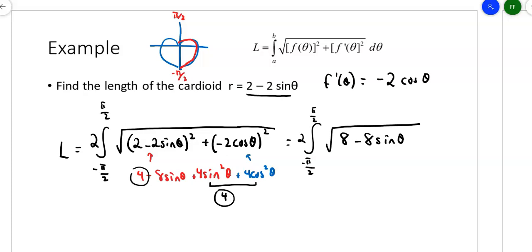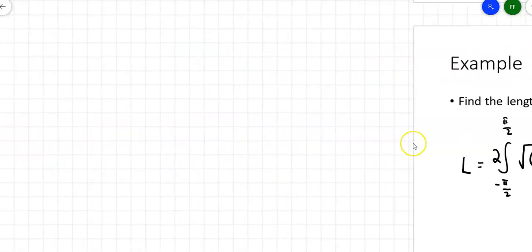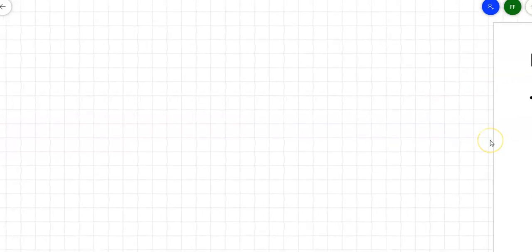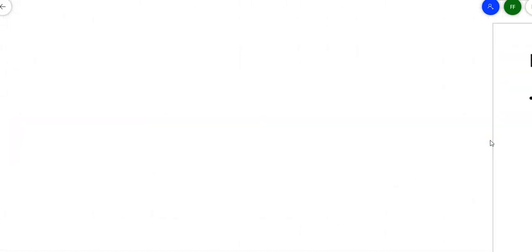We could throw this on a calculator, but let's try to work it out analytically. Pull out √8, leaving √(1 − sinθ). To make this integrable, let's multiply top and bottom by the conjugate √(1 + sinθ).